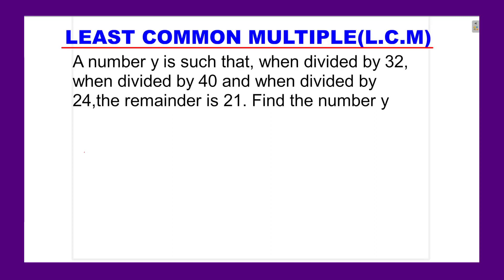Least common multiple. A number y is such that when divided by 32, when divided by 40, and when divided by 24, the remainder is 21. Find the number y.